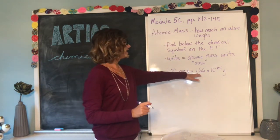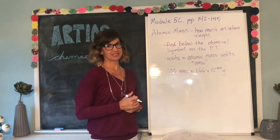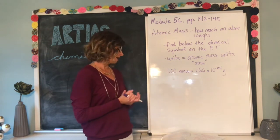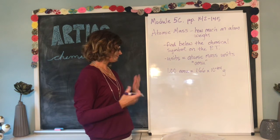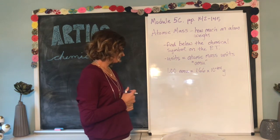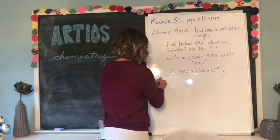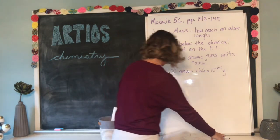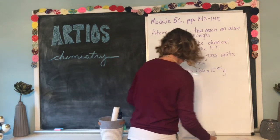So we have 23 zeros before we actually get to that 166 — that's how small the mass is for an atom. Let's take a look at an example. Example 5.4 in your book asks: what is the mass of a nitrogen atom in grams?